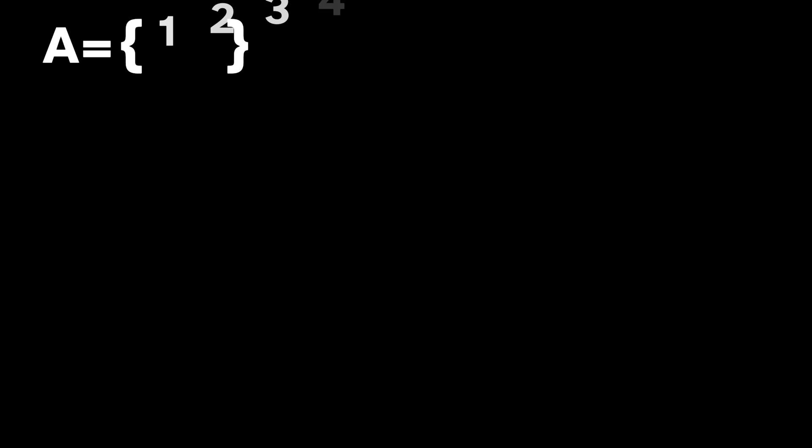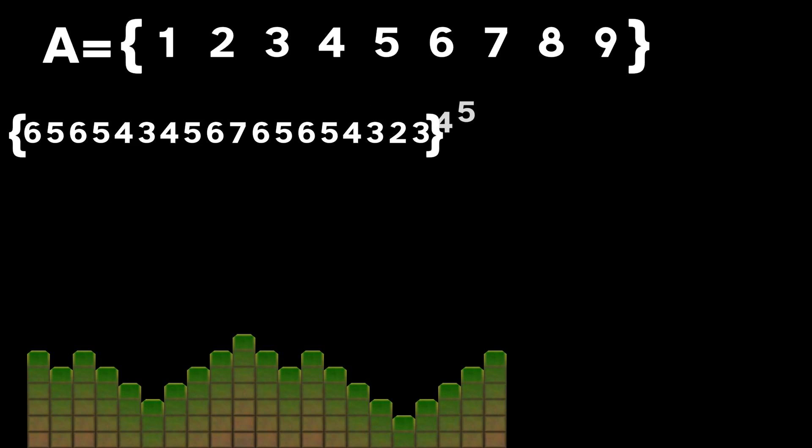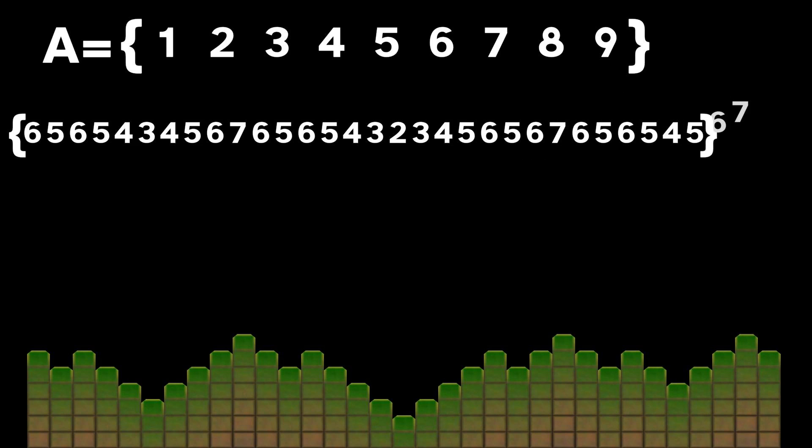As another example, suppose our alphabet were all the digits 1 to 9. Let's imagine that a sequence over this alphabet actually encoded some sort of simple height map for one-dimensional terrain that might be used in a platformer game. And let's assume that we don't want any cliffs that are too high to jump. Maybe 1 unit is fine, but 2 units is too high.